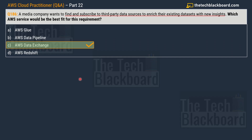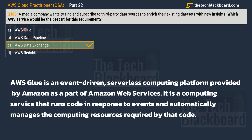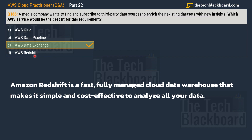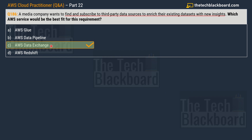Now let's understand why the other options are incorrect. AWS Glue is a serverless data integration service that helps analytics users discover, prepare, and integrate data from multiple sources — it connects to 70+ diverse data sources, but is not the best fit for third-party data sets. AWS Data Pipeline facilitates processing and transfer of data between AWS services, but again not for third-party data sources. AWS Redshift is a data warehouse good for loading and performing analytics, but not for finding and subscribing to third-party data sources.